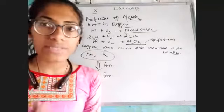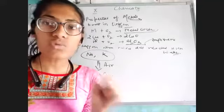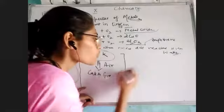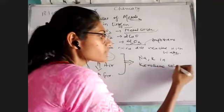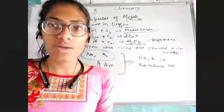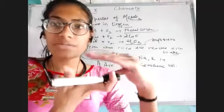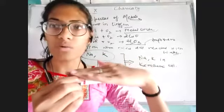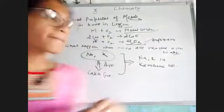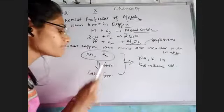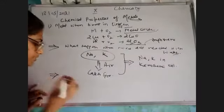To avoid laboratory accidents, sodium and potassium are always stored in kerosene oil. When stored in kerosene oil, a layer of oil covers them so oxygen cannot contact them directly — the oxygen would have to first pass through the kerosene oil layer to reach the sodium or potassium. This is a very important point: because sodium and potassium catch fire, we must keep them in kerosene oil.